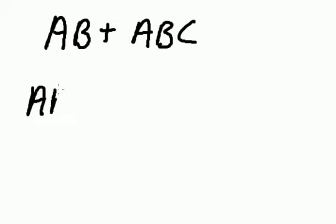So I pull AB out. AB times what will give me AB? The answer is 1. AB times 1 will give me AB. Let me bring down the positive sign. And now AB times what will give me ABC? The answer is C. AB times C gives me ABC. That makes sense.